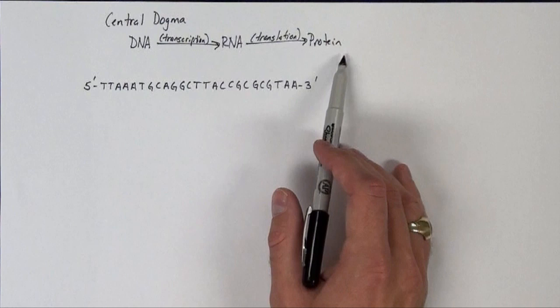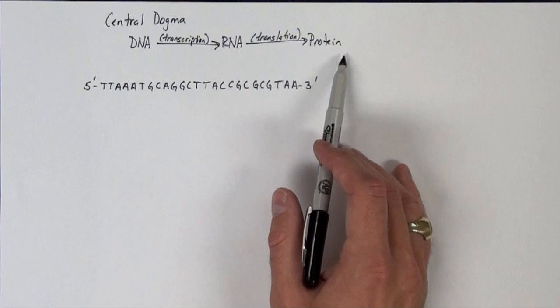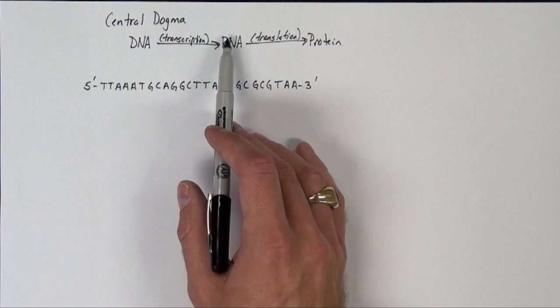So in this schematic form, it looks like this. DNA is transcribed into RNA or ribonucleic acid. These are very similar molecules.